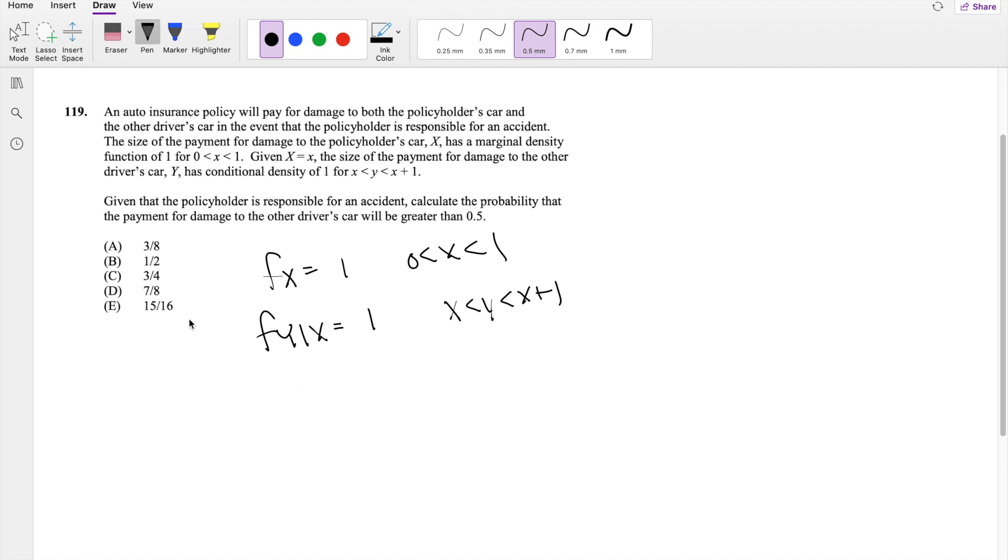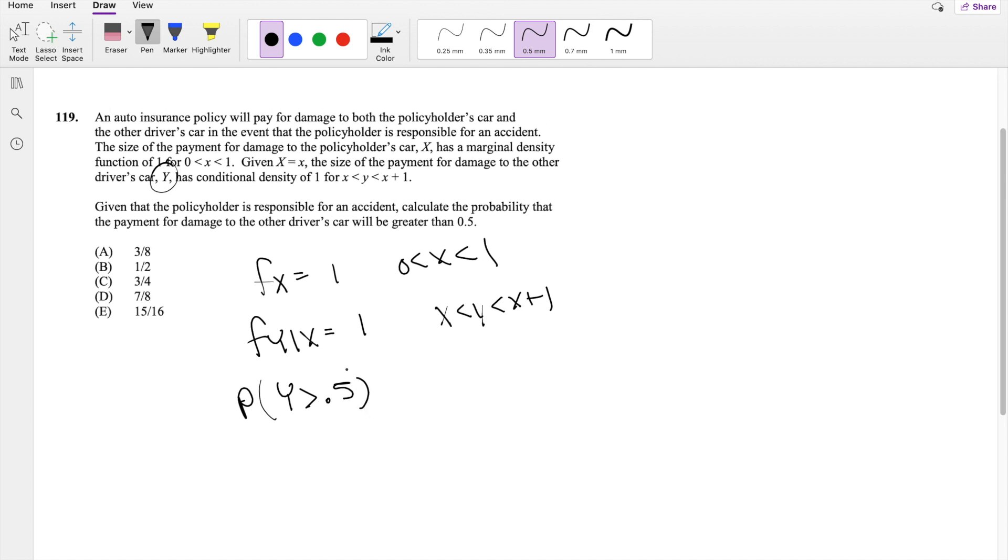And they're asked to find that given the policyholder is responsible for an accident, calculate the probability that payment for damage to the other driver y will be greater than 0.5. So they're saying probability that y is greater than 0.5. And you might be wondering, why is it not given x?